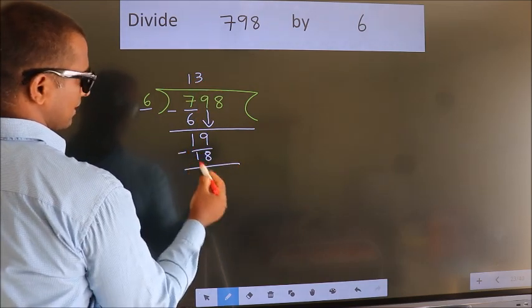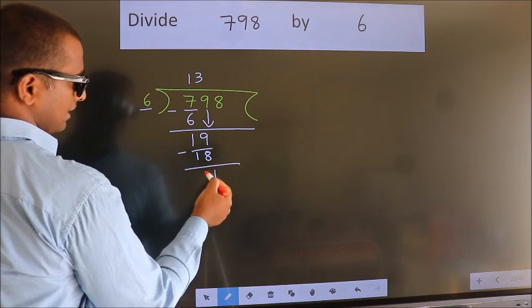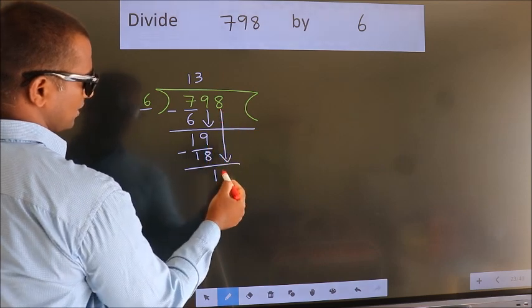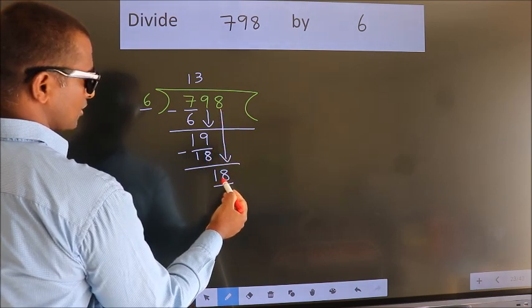Now we subtract. We get 1. After this, bring down the beside number. So 8 down. So 18.